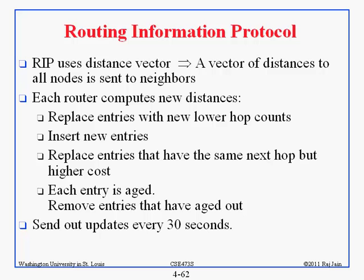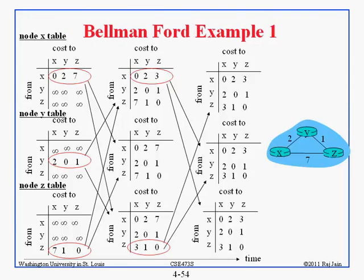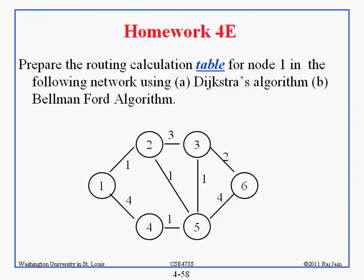Distance vector means a vector of distances to all nodes is sent to your neighbors. The way to remember it: the big vectors are sent to my neighbors. When they get the table, they look at it and create new entries. If anything changes in the table, they send it to their neighbors again — you send the whole table to your neighbors and if it changes you send it again until nothing changes.